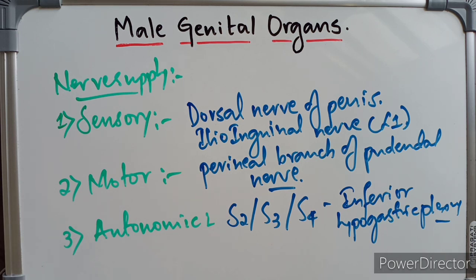So this is about the arterial supply, venous drainage, lymphatic drainage, and the nerve supply of the penis. Thank you for watching till the end. If you haven't subscribed to our channel, make sure to subscribe, hit the like button, and share it with your friends to learn more about anatomy. Thank you so much.